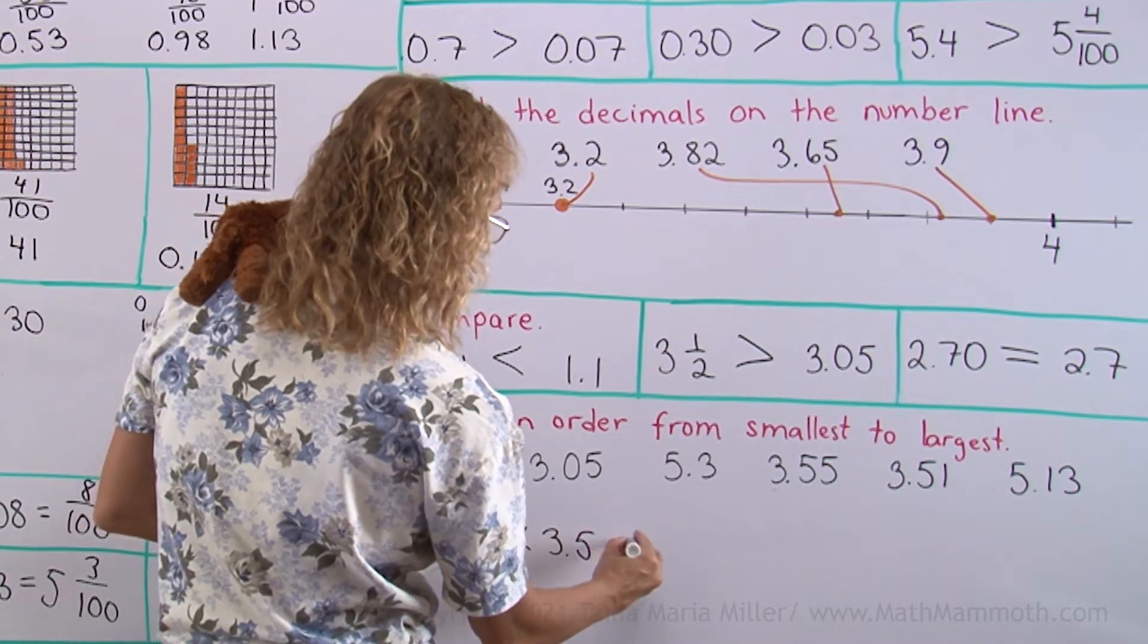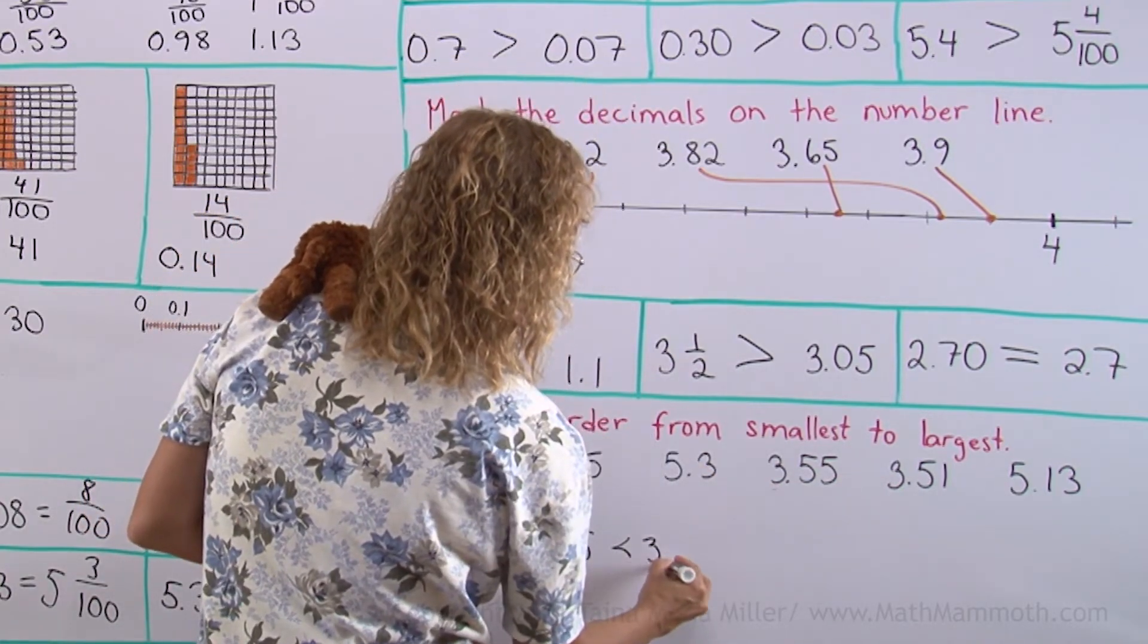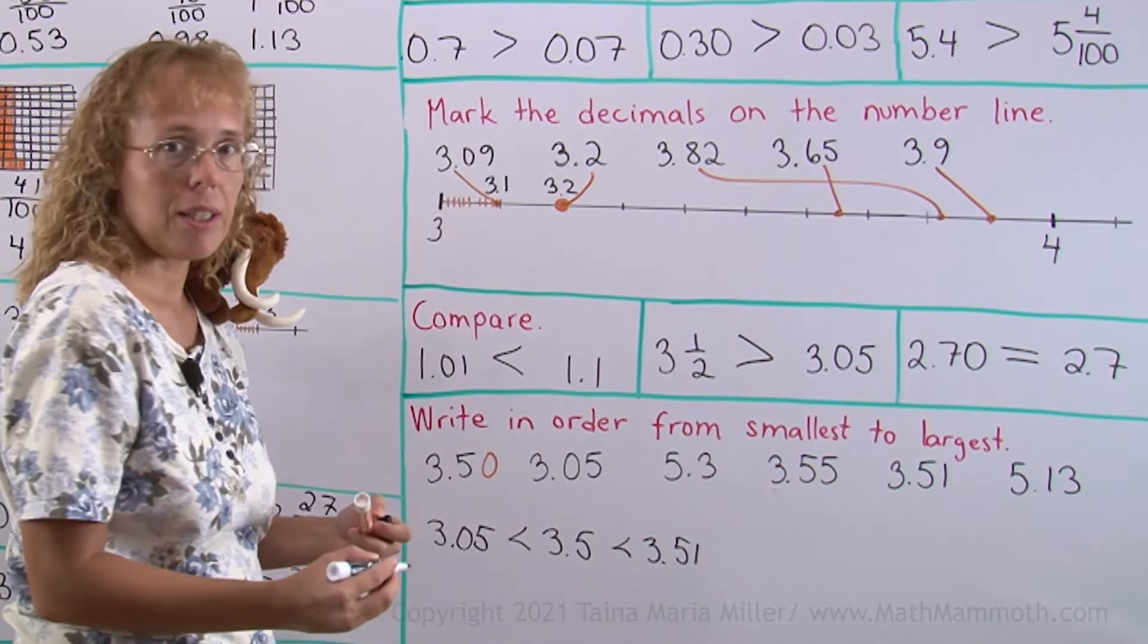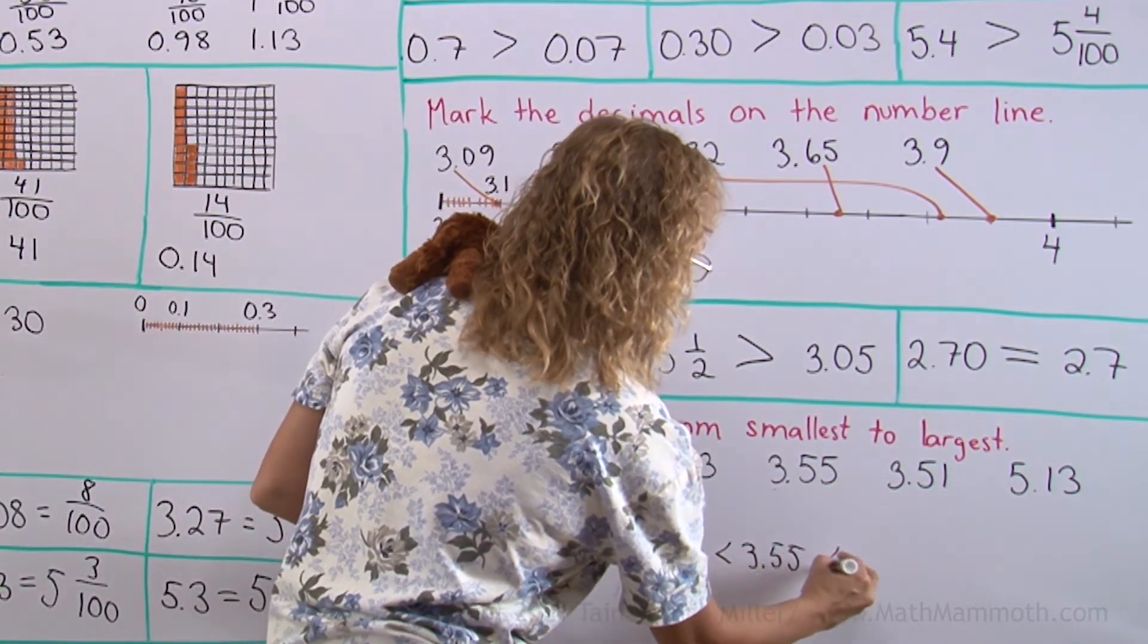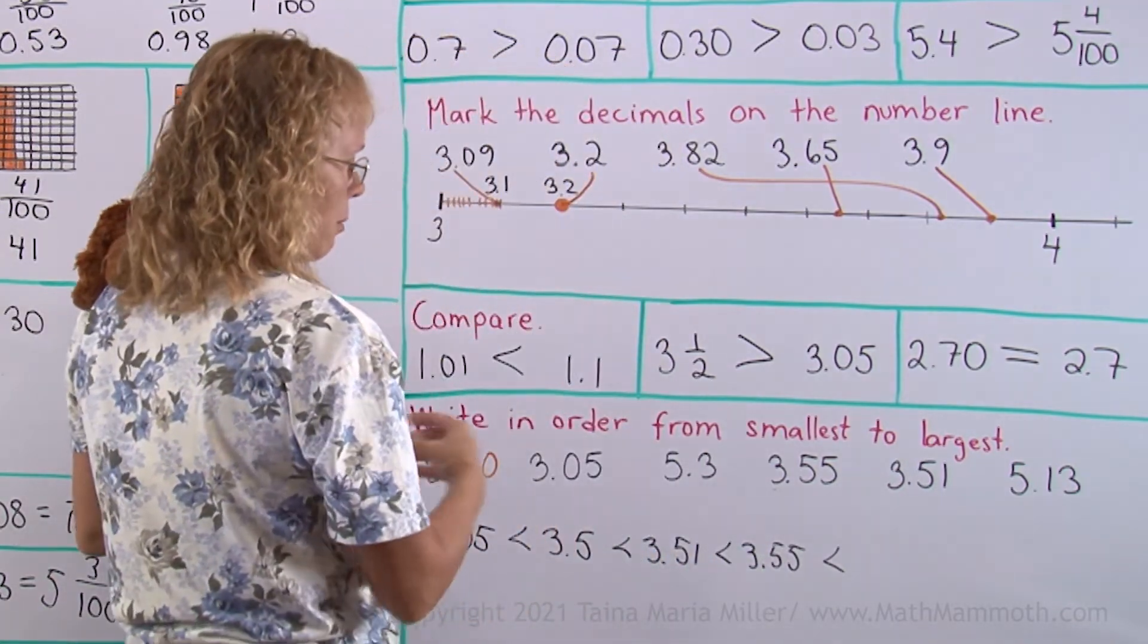3 and a half. Then comes this one. 3.51, 51 hundredths. And then this 3 and 55 hundredths. Lastly we have these two.